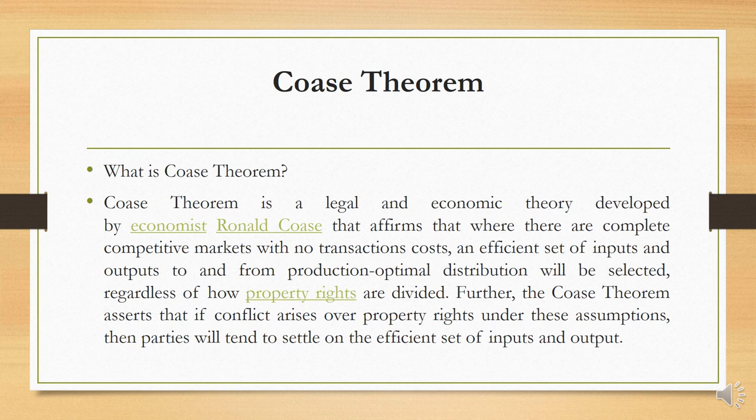The Coase Theorem is a legal and economic theory developed by economist Ronald Coase that affirms that where there are complete competitive markets with no transaction costs, an efficient set of inputs and outputs to and from production — optimal distribution — will be selected regardless of how property rights are divided. Furthermore, the Coase Theorem asserts that if conflict arises over property rights under these assumptions, the parties will tend to settle on the efficient set of inputs and outputs.